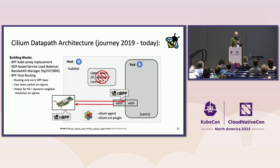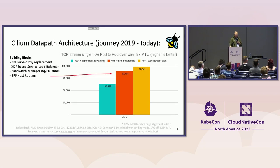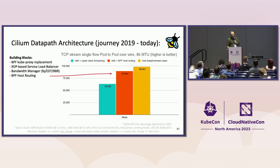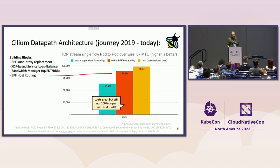Looking at the performance numbers, this allows pushing the TCP bulk stream workload to 90 gigabit per second instead of 63. So this gives a huge performance advantage. It's still not perfect — not yet 100% on par with having the application inside the host itself. So there are more pieces to the puzzle.